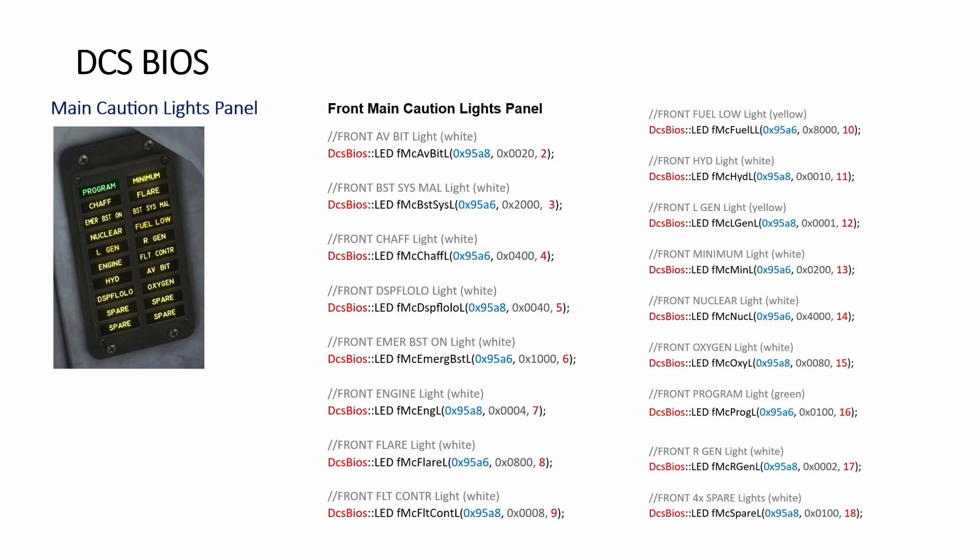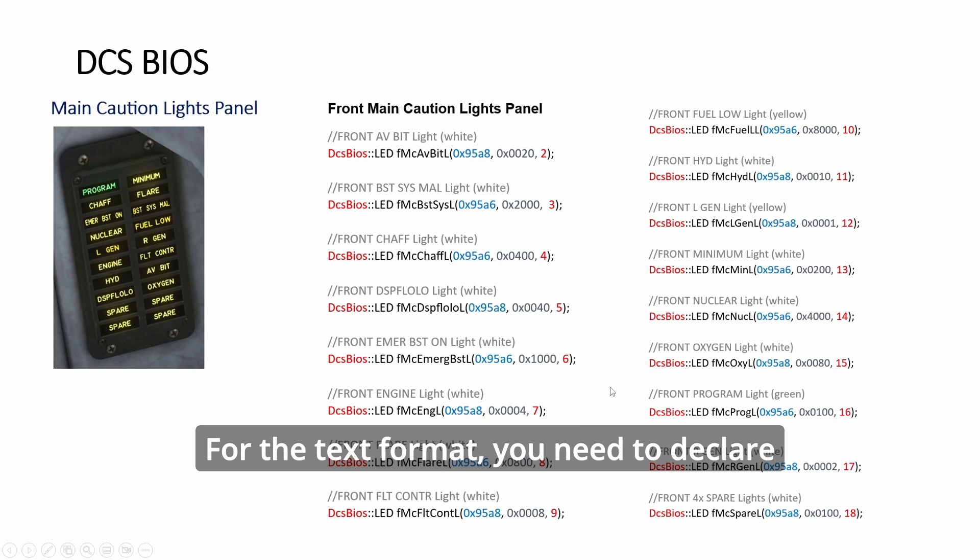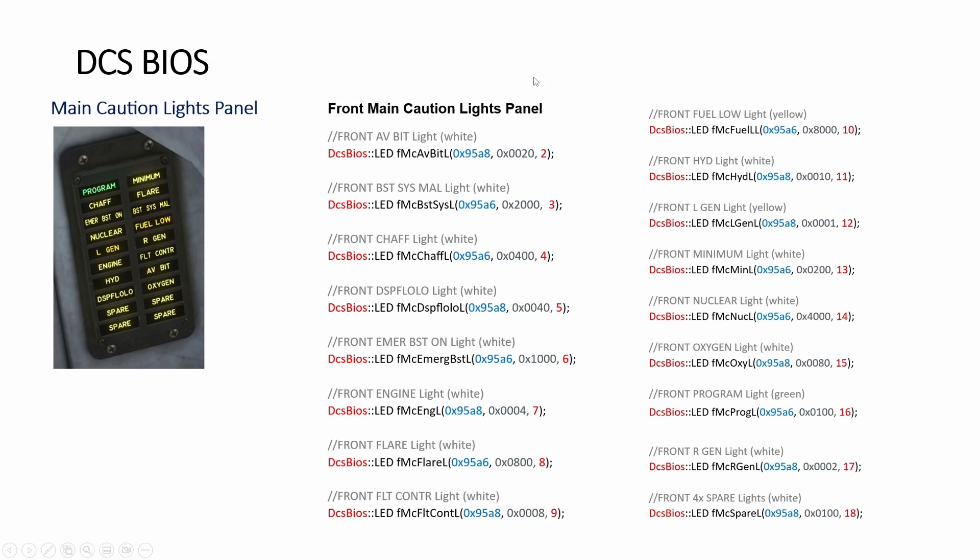So this is the code. The one that you see from board will be the new text format and this is the old one that I got working. For the text format you need to declare something at the beginning. I haven't done that. So I'm using the old style and it works. Okay, so basically it's A6 or A8 and then all these numbers will change for each one. So let's take a look.